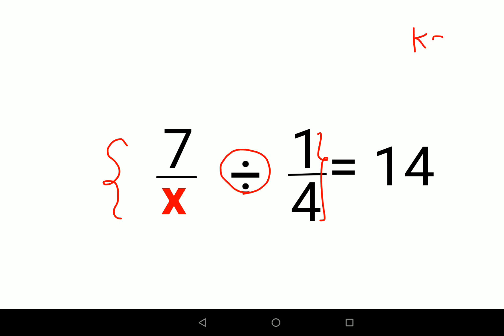KCF means you keep the first fraction as it is. So 7 upon x remains as it is. Then C stands for changing, which means you change the division sign to multiplication sign. And F stands for flipping, which means you flip or take the reciprocal of 1 upon 4, which equals 14.